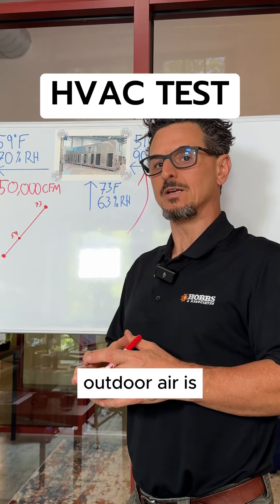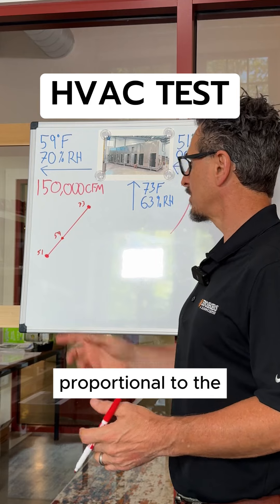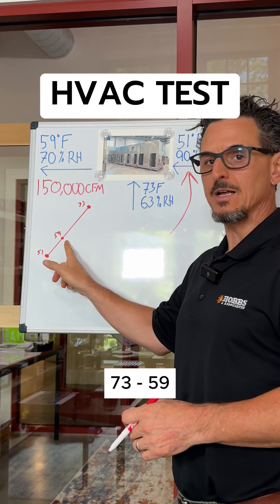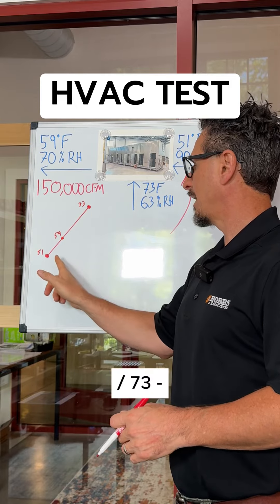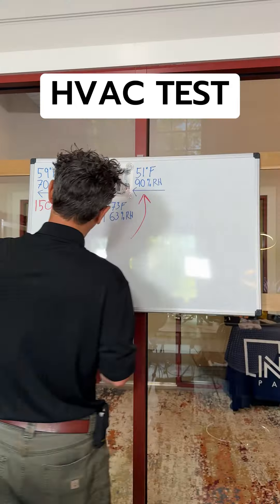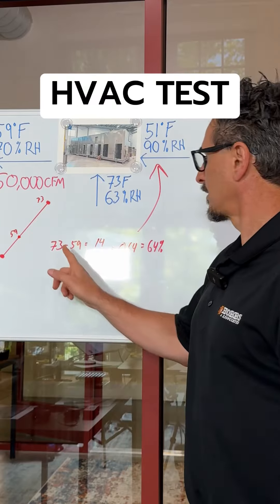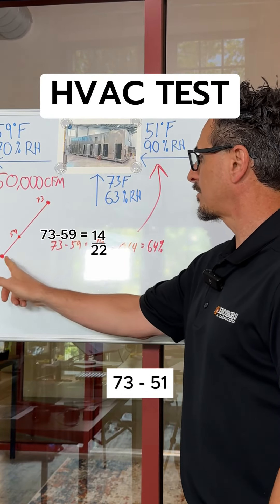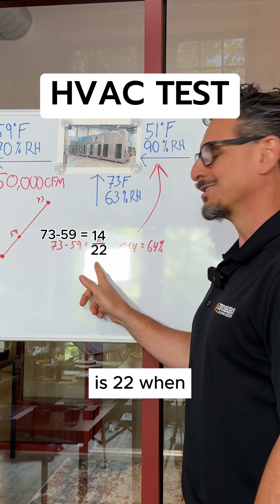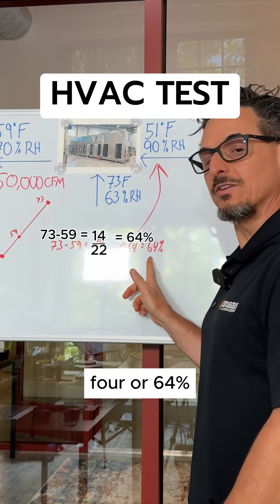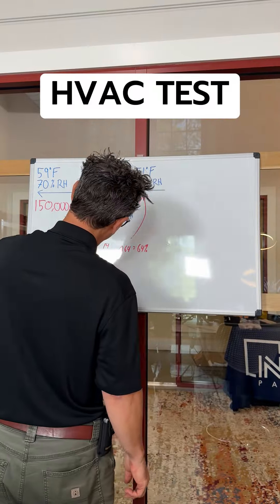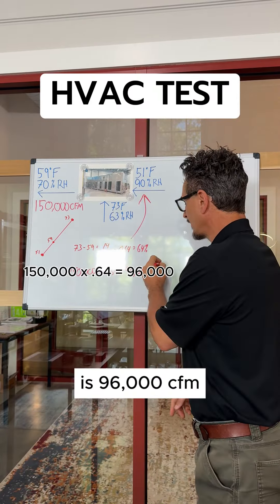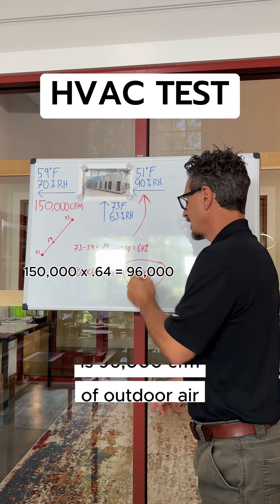The percentage of outdoor air is directly proportional to the temperature difference: 73 minus 59 divided by 73 minus 51. So 73 minus 59 is 14, and 73 minus 51 is 22. When you divide those two, it's 0.64 or 64%. So the answer is 96,000 CFM of outdoor air.